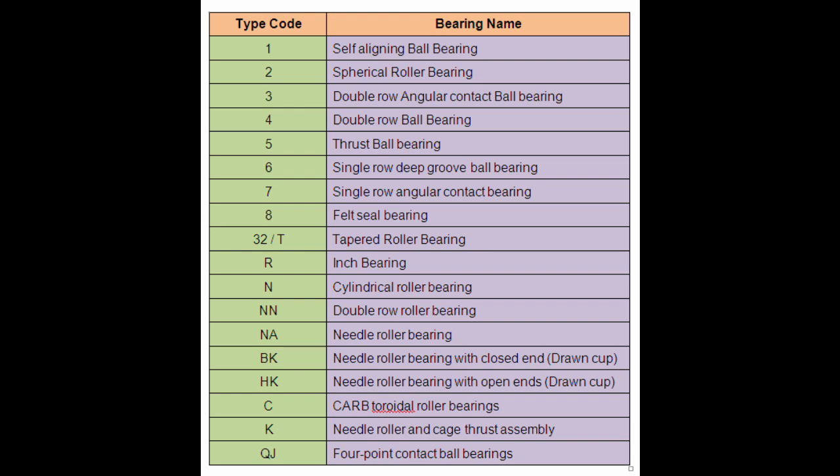Thus, we can easily identify now that in case of bearing 6305ZZ, the first digit 6 means the bearing type is Single Row Deep Groove Ball Bearing. In case of an inch bearing, the bearing's first digit will be R.